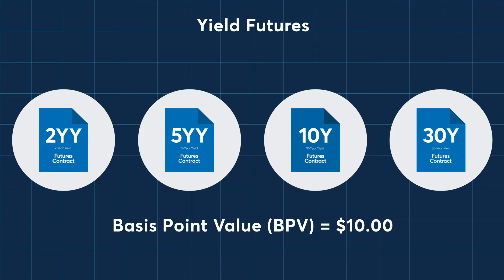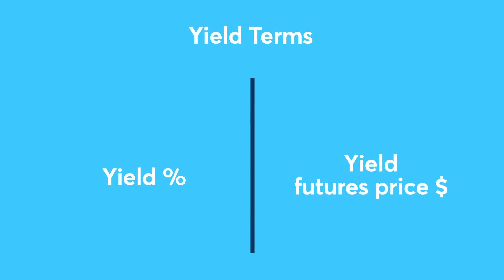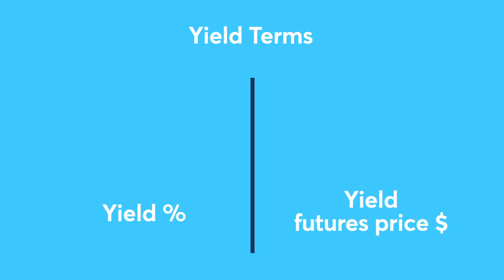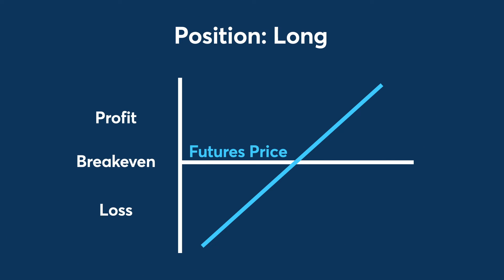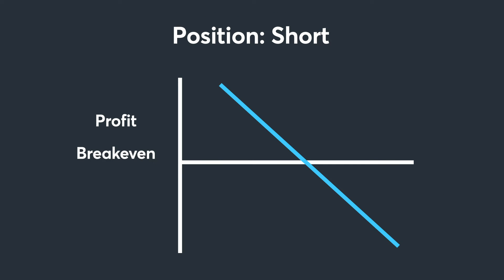The pricing convention of these contracts is expressed in yield terms. Yield Futures trade in a direct relationship to changes in yield. Unlike the traditional U.S. Treasury Futures contracts, which trade in price terms and have an inverse relationship to yield, a trader buying Yield Futures could benefit from rising yields, whereas a short position could benefit from falling yields.